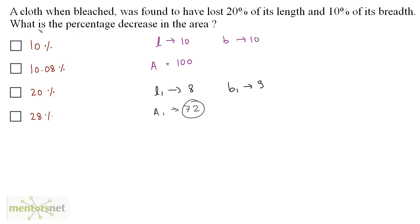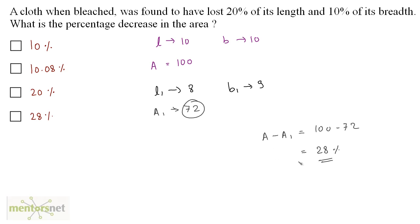We have been asked: what is the percentage decrease in the area? The old area was 100 percent and the new area is 72 percent. So the decrease is 100 minus 72, which equals 28 percent. The percentage decrease in the area is 28 percent, so option D is the correct answer.